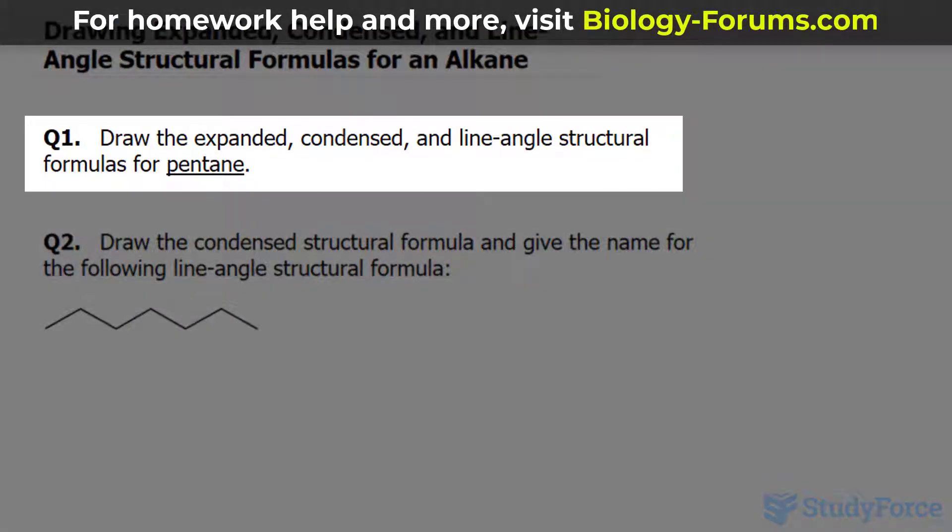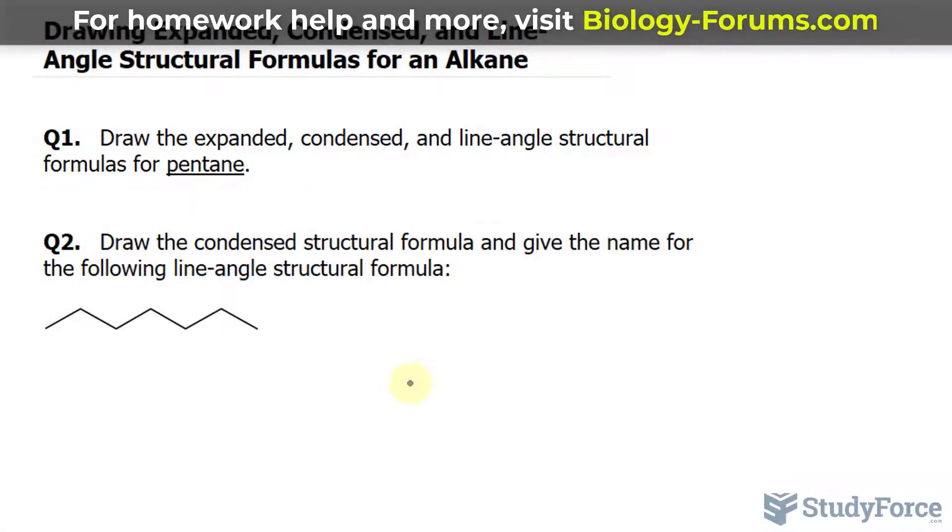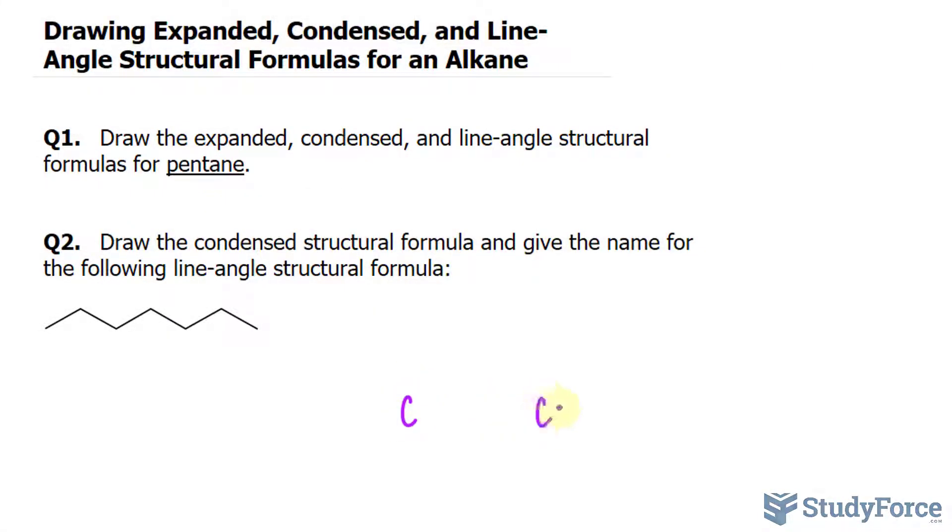The hydrocarbon we're using for question number one is pentane. So I'll start with the expanded version of pentane. Pentane is a five-carbon molecule, so I'll start by writing down five C's to represent the backbone of this molecule. And each of these are bonded together with a covalent bond.